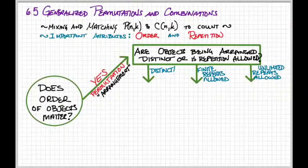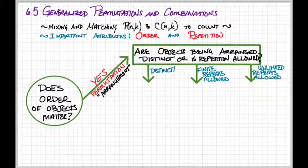If the objects you're arranging are entirely distinct, what we're looking at here is a simple permutation, P of N,K.